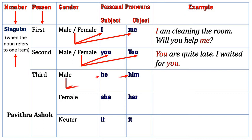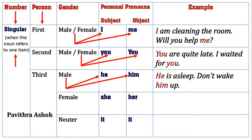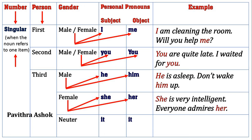Let's move on to third person personal pronoun in singular number. Male: subject is he, object is him. For example: 'He is asleep, don't wake him up.' Next, female: subject is she, object is her. For example: 'She is very intelligent. Everyone admires her.'